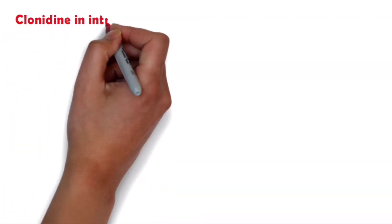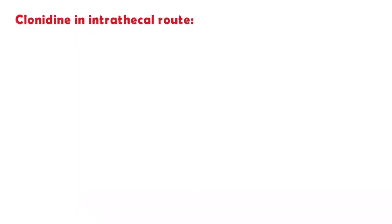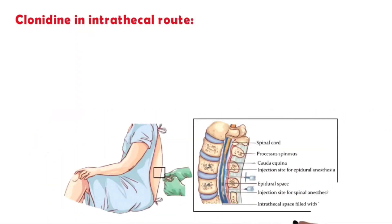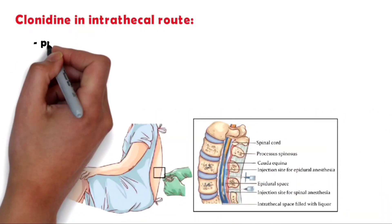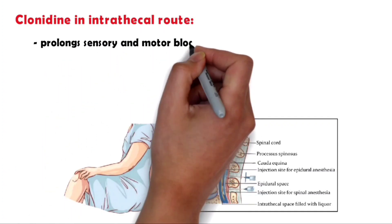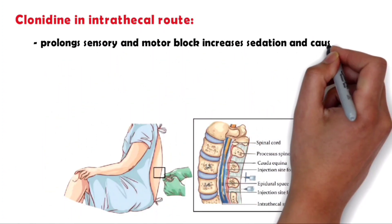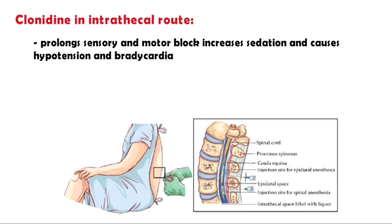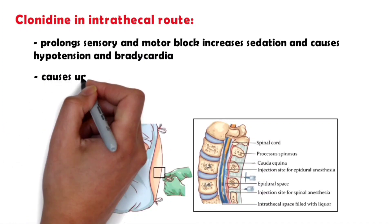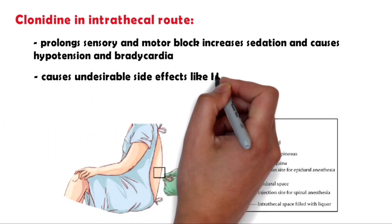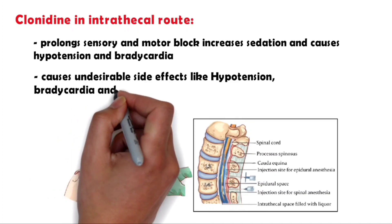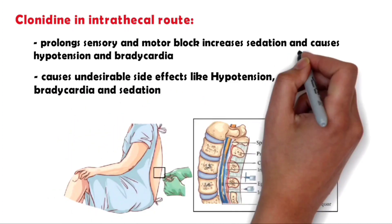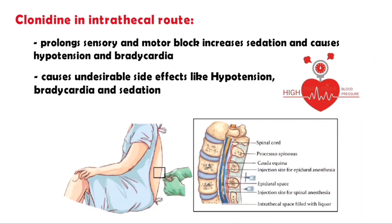Clonidine in the intrathecal route: as an alpha-2 agonist, spinally-injected Clonidine prolongs sensory and motor block, increases sedation, and causes hypotension and bradycardia. So Clonidine can prolong both sensory and motor block, but it also causes undesirable side effects like hypotension, bradycardia, and sedation. That's why Clonidine is administered intrathecally when the patient has hypertension and also in long surgeries.